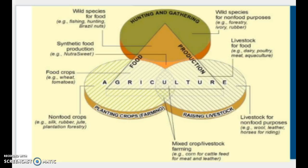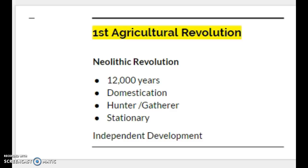Agriculture falls in the primary sector of our economic activities — just a review from our discussion of development. Our first agriculture revolution, also known as the Neolithic Revolution, most geographers and historians would say begins about over 12,000 years ago. The main keyword to keep in mind is the domestication of both plants and animals.